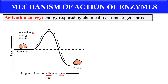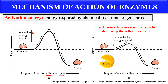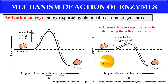But in the presence of enzyme, as you can see in this diagram, this activation energy is now lowered. So enzymes just lower down the activation energy, and in this way they make the chemical reaction proceed much faster. By just decreasing the activation energy, enzymes make reactions very much faster.